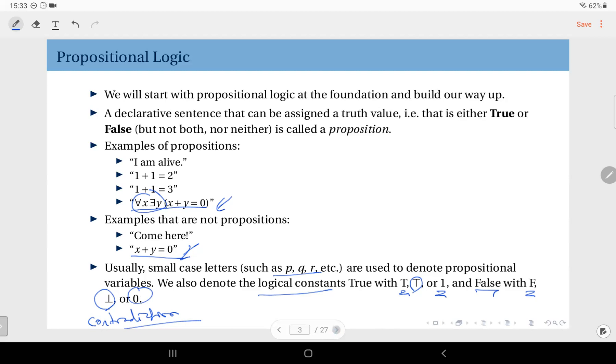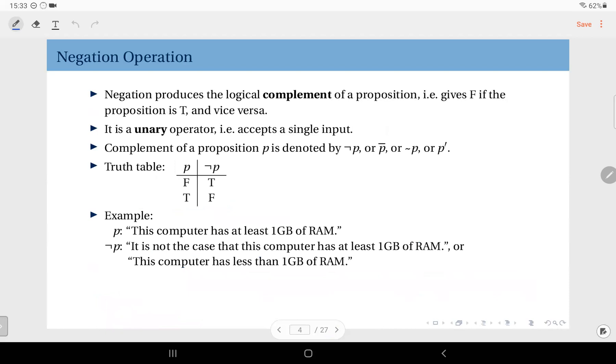Now that we have the definition of a proposition, we can talk about the first operation, which is negation. This is a very simple operation. It produces the logical complement of a proposition. What's a complement? The complement of true is false, and the complement of false is true. So you just negate the value of the proposition, or rather you change the value. It gives false if the proposition is true, and vice versa. This is the representation we use to denote negation. Actually, it's one of the representations we use. Sometimes you can use this one. You can see some books use this with a tilde, or sometimes with a prime. These are all representations we can use to denote negation, depending on the context.